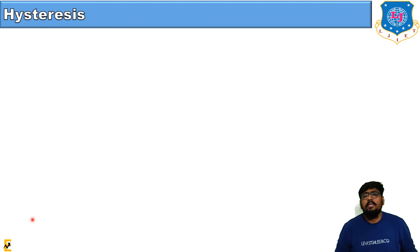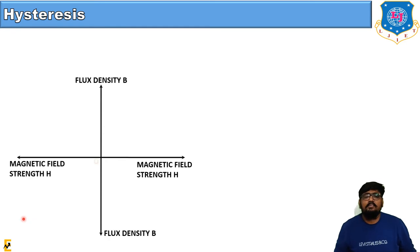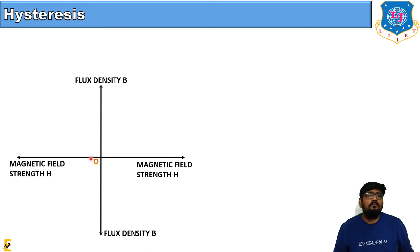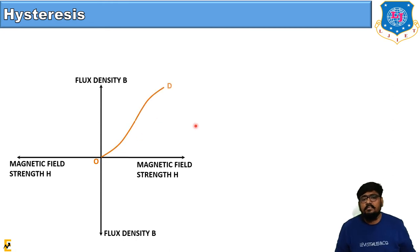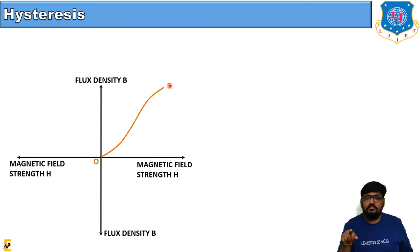Let's go further towards the BH curve or hysteresis loop. As you can see in the figure, the vertical Y-axis indicates the magnetic flux density B and the X-axis indicates the magnetic field strength H. Starting from the origin point, with the increase in magnetic field strength, flux density increases as indicated by the curve OD.